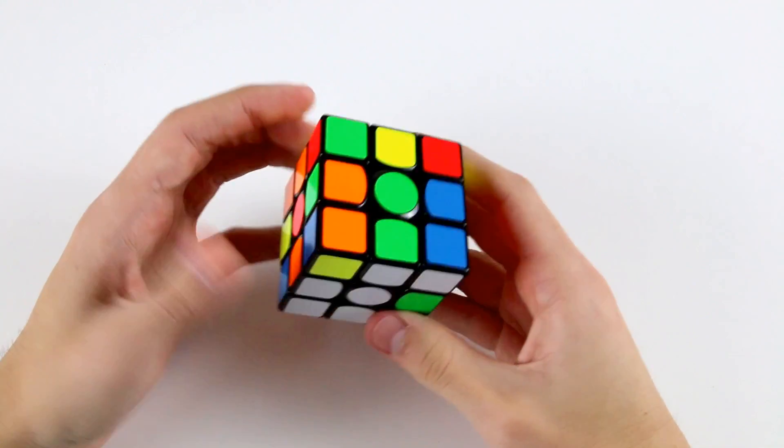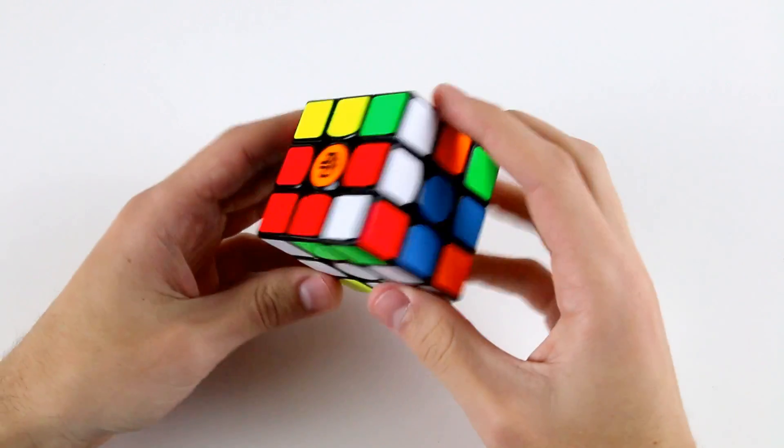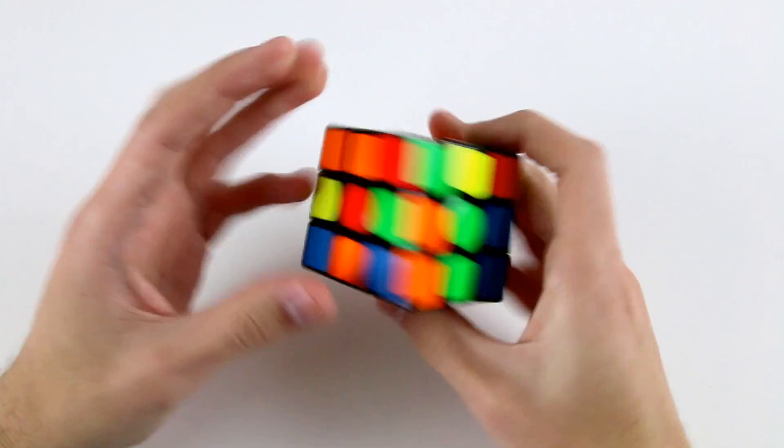This tip applies to a very small number of scrambles, but let's say we have two cross pieces solved and we can solve these two incorrectly, so this red one and the orange one here.